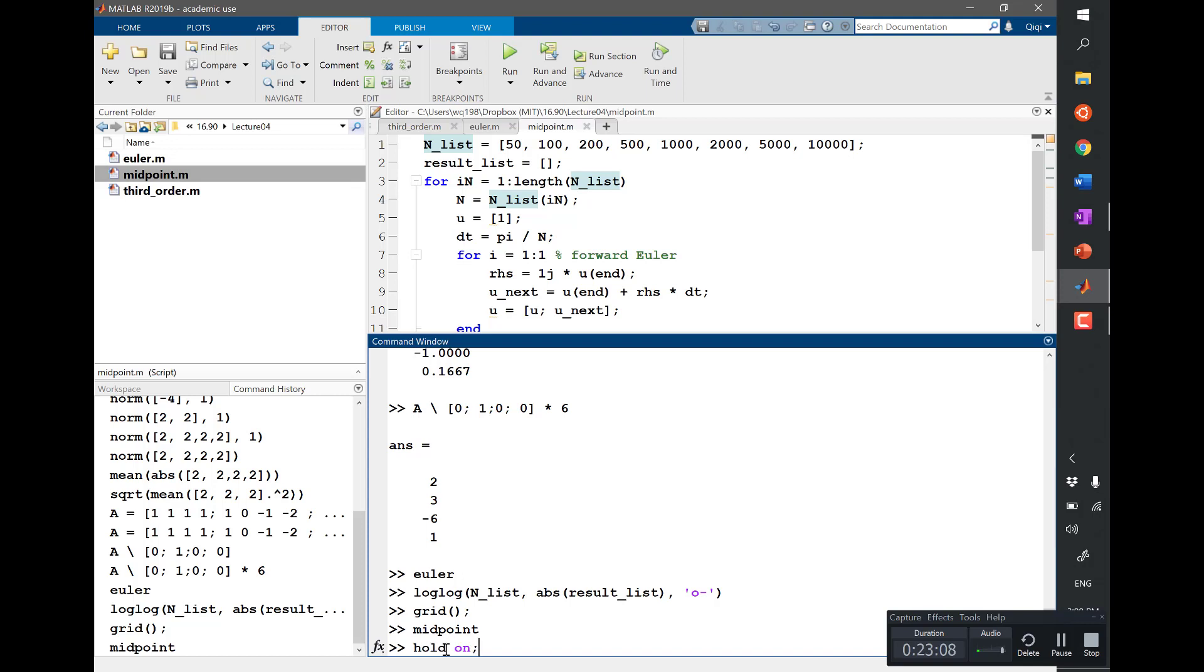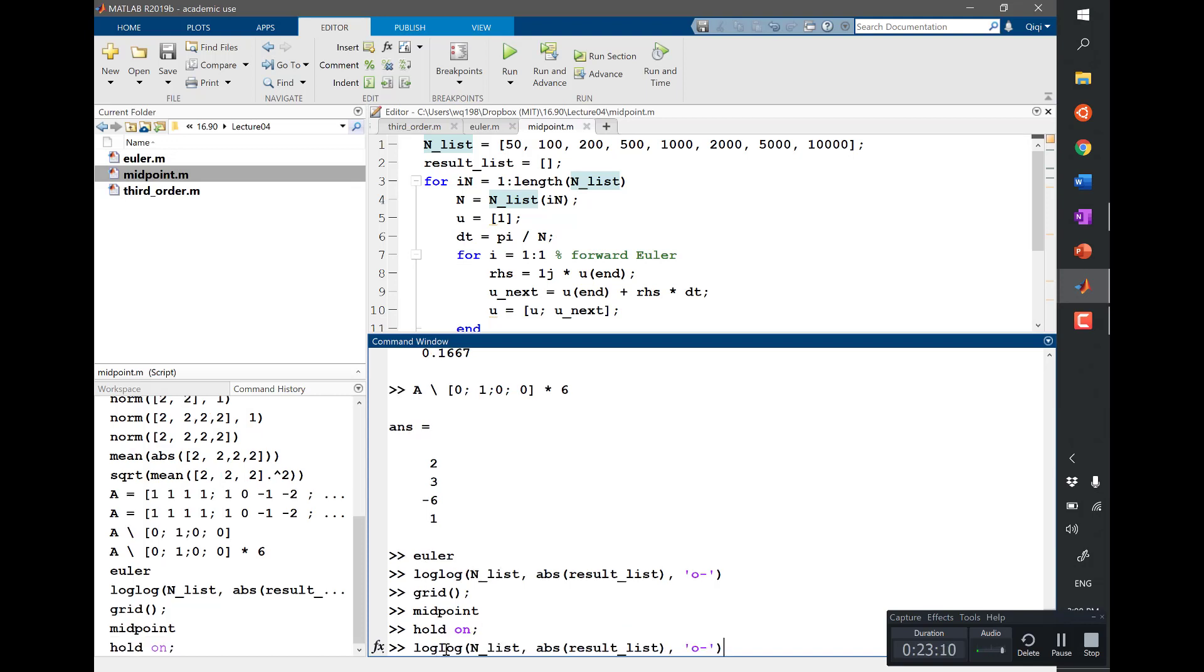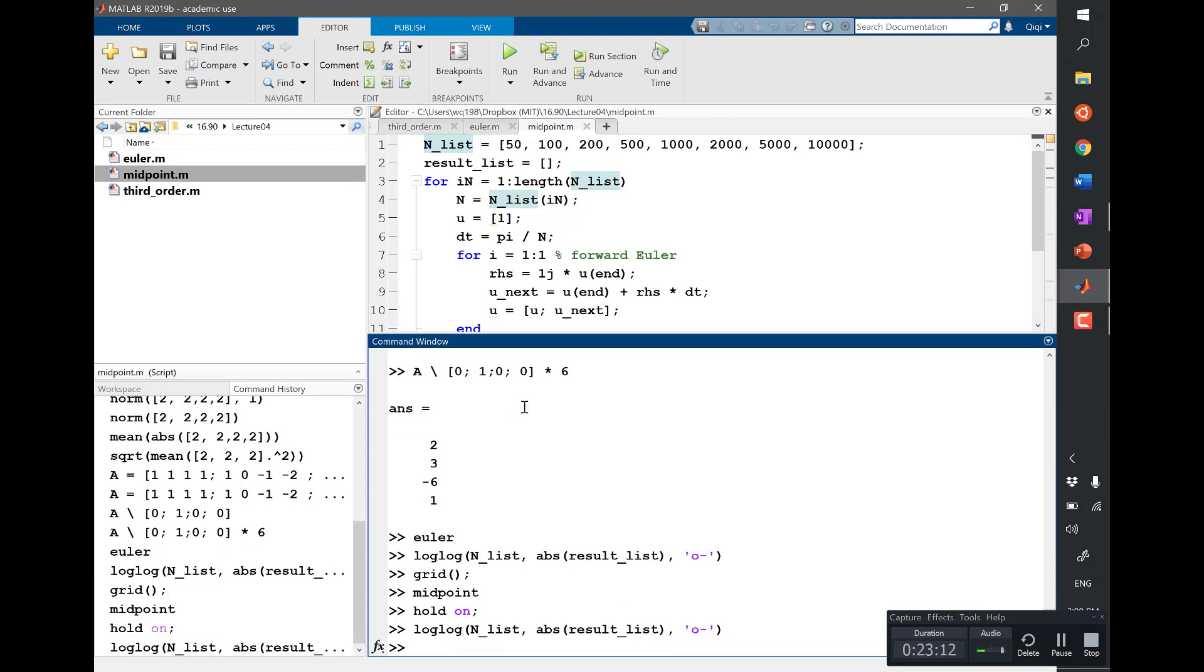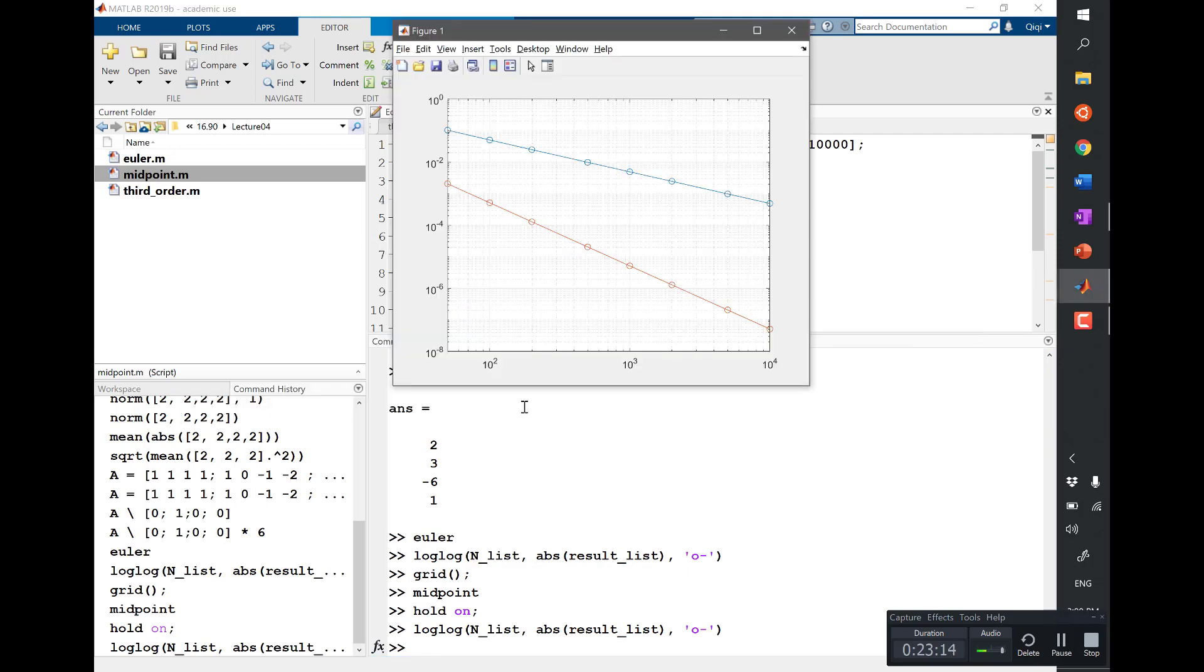So we'll hold on and we'll log log with the result list of our midpoint scheme. We do see that the slope of the red is actually higher than the slope of the blue.